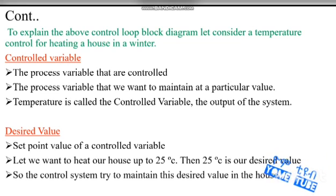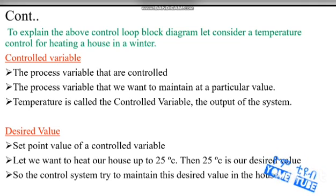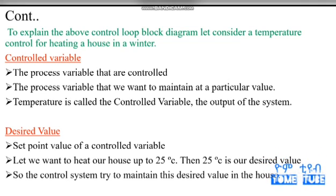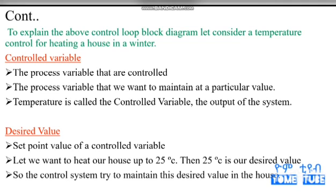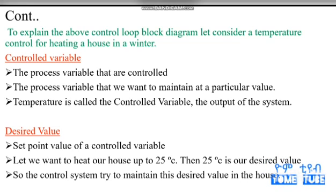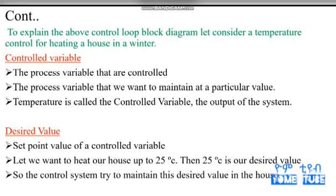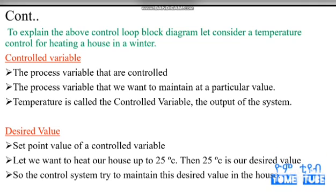The desired value is a set point. The set point value of a controlled variable — there is a controlled variable: temperature. The output is a measured value and the input is a measured value. The value is a set point. The set point is a controlled variable which is a multi-channel value to maintain.